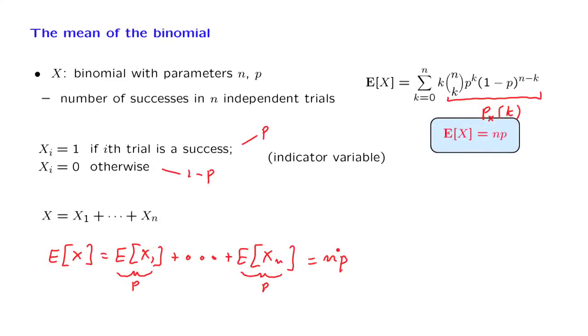This answer, of course, makes also intuitive sense. If we have p equal to 1 half and we toss a coin 100 times, the expected number or the average number of heads we expect to see will be 1 half times 100, which is 50. The higher p is, the more successes we expect to see. And of course, if we double n, we expect to see twice as many successes.